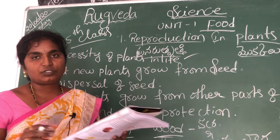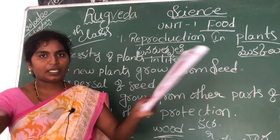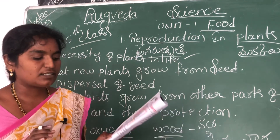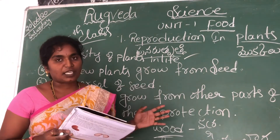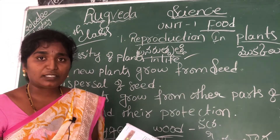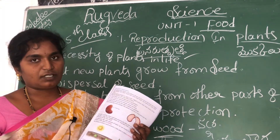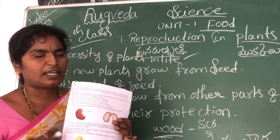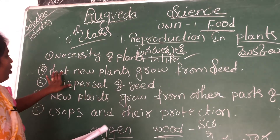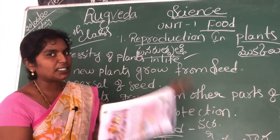Planting more trees increases the forest, and from these plants we get rain. Plants also make our world beautiful — if you plant more trees in your surroundings, it looks good. Life cannot exist without plants; all living things' lives depend on them. About new plants growing from seeds, I will explain in the next class.